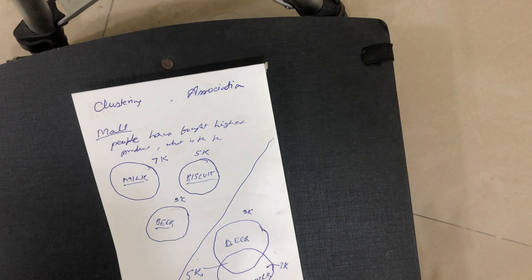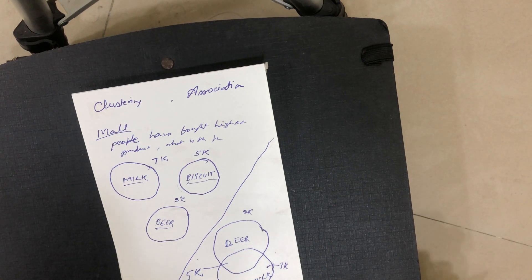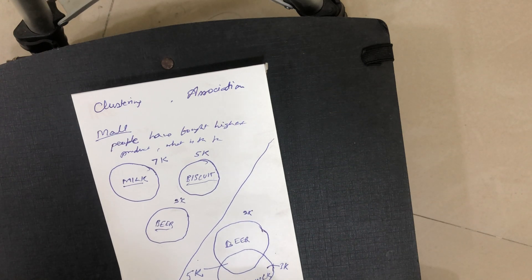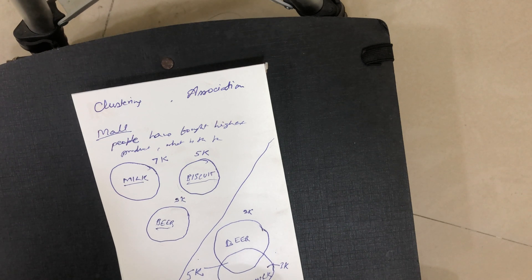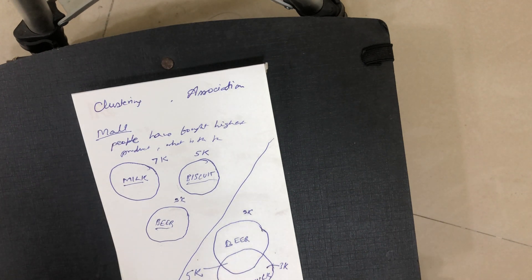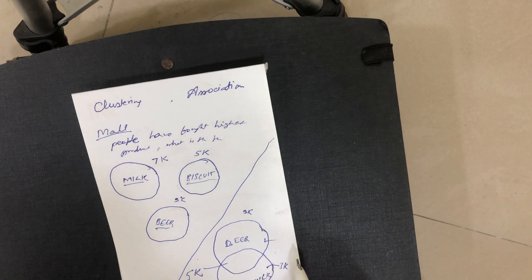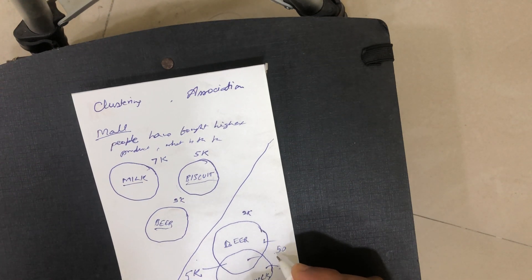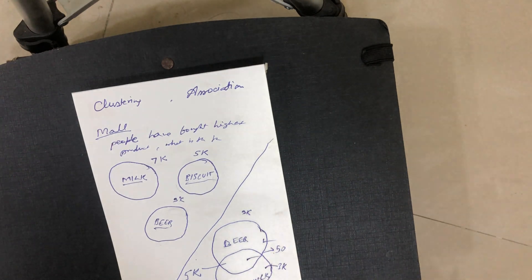Now, what help will we get with that insight? We can see that those people who are buying beer are also buying milk, and it is a large portion of the data. So what we can do is, where we place the beer, we can put the milk just near to it to increase the sale. Because we have got some insight relation from the data set — the data set is explaining that people who are interested in buying one product will also be buying the other product in a ratio of more than 50%. That kind of insight we will get in the case of associations.